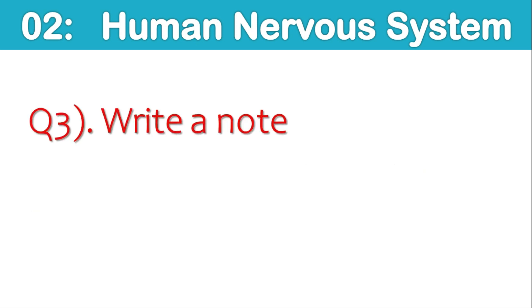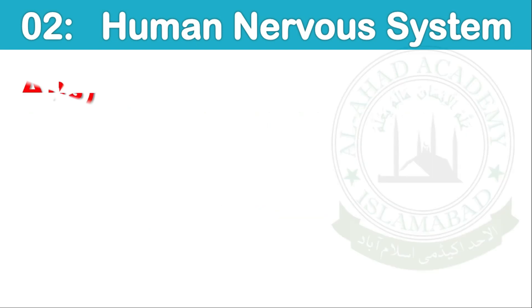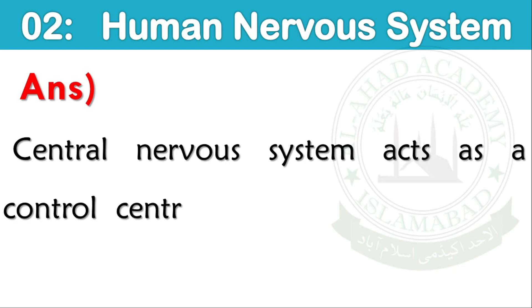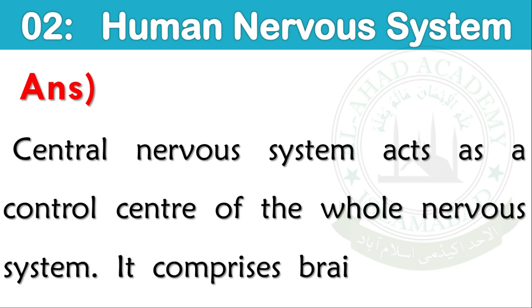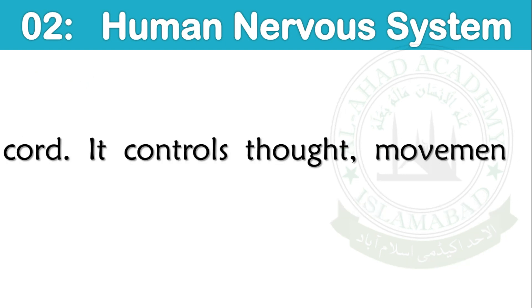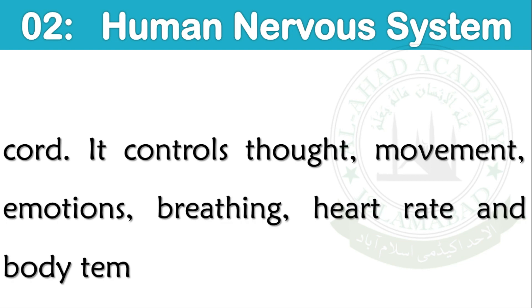Question number 3. Write a note on the central nervous system. The central nervous system acts as a control center of the whole nervous system. It comprises the brain and spinal cord. It controls thoughts, movements, emotions, breathing, heart rate and body temperature, etc.